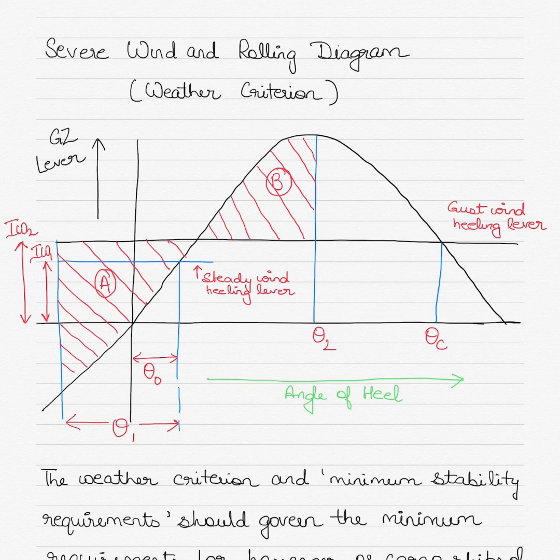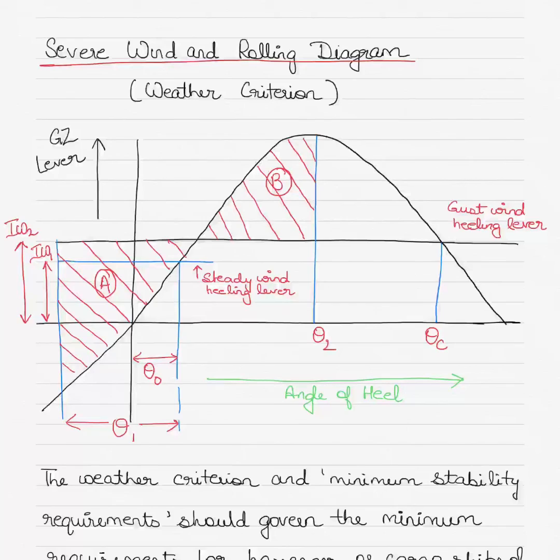Continuing with the videos on advanced ship stability, today's video is on the understanding of the severe wind and rolling diagram and how the stability of the vessel is anticipated for various conditions of wind pressure acting on the vessel. This is also known as the weather criterion for ship stability.